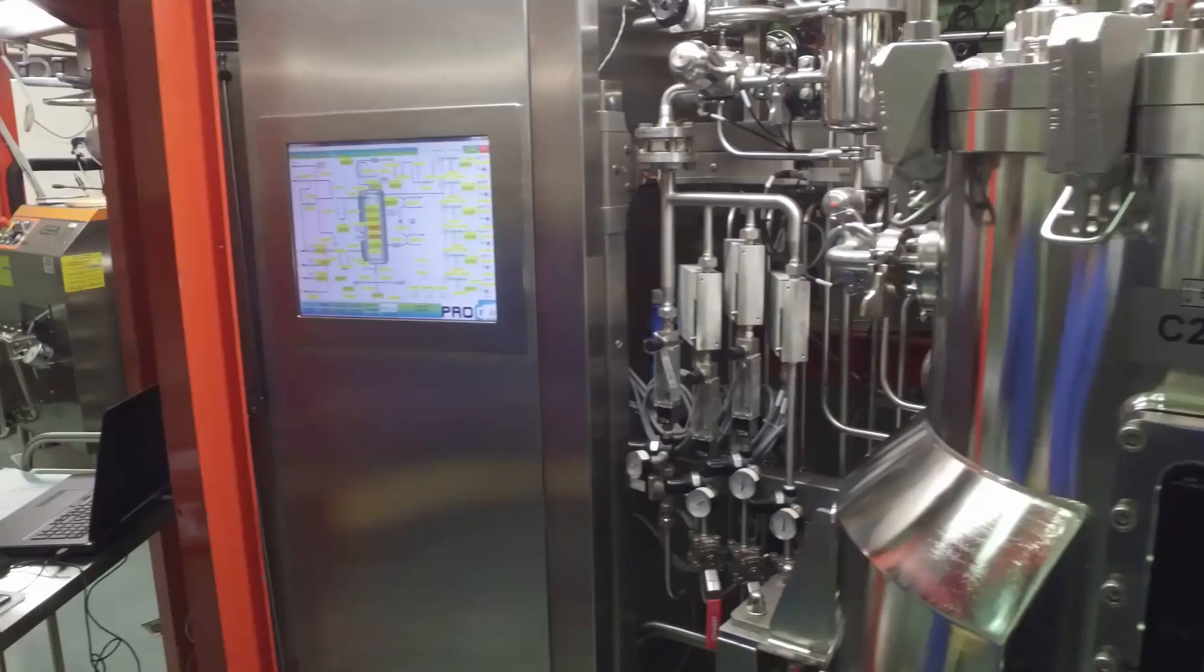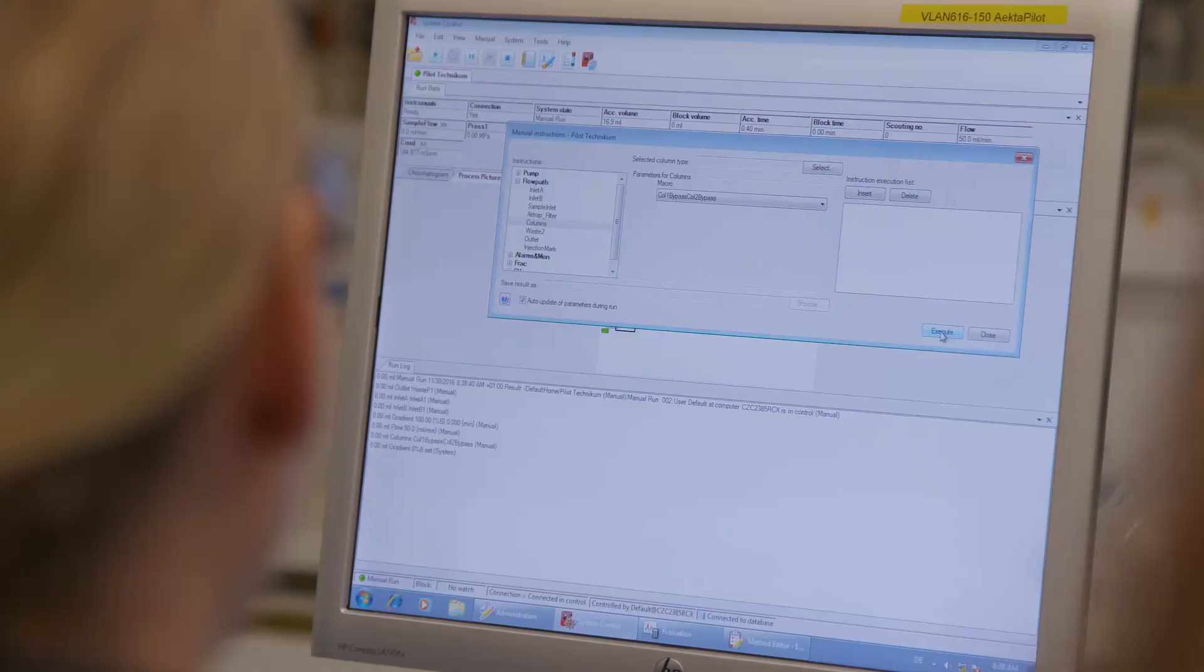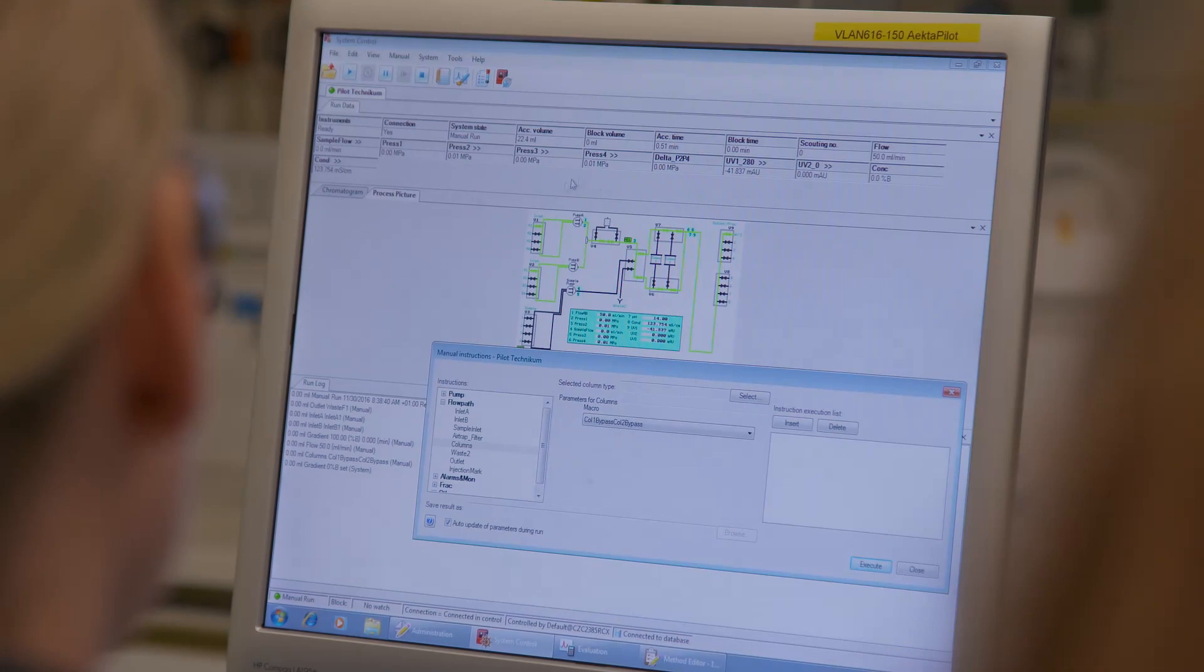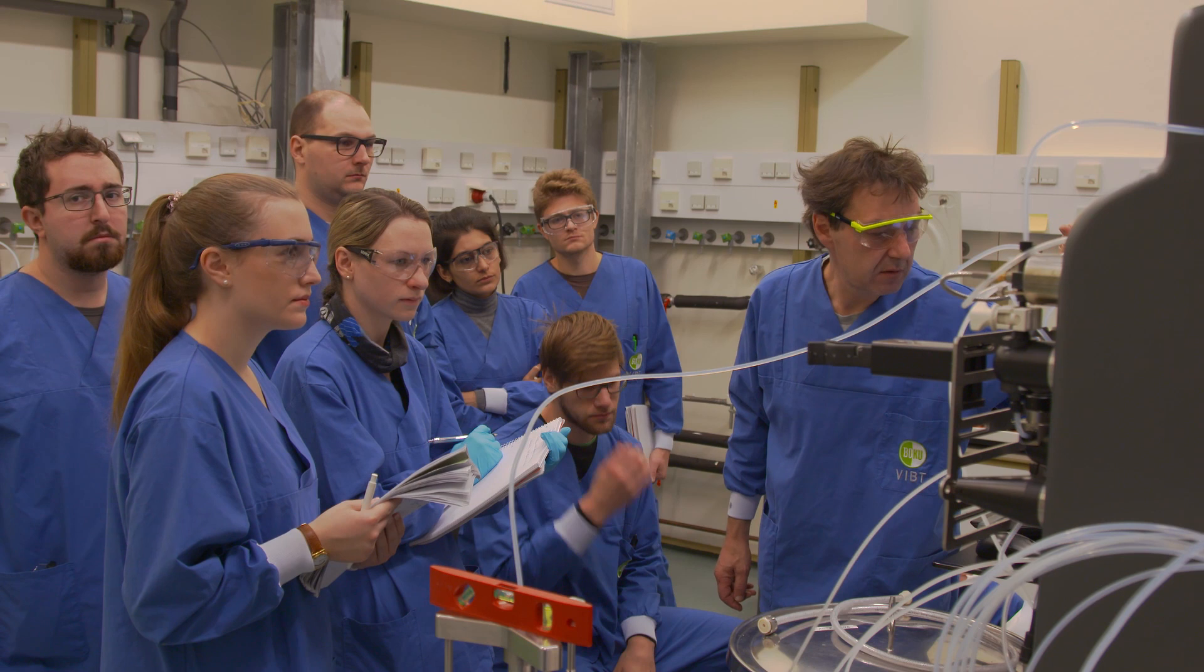General equipment setup, implementation and qualification of the different unit operations was performed using a recombinant production and purification process of green fluorescent protein, also known as GFP, in the bacterial strain Escherichia coli. The developed process can deliver 40 to 120 grams of extremely pure GFP.